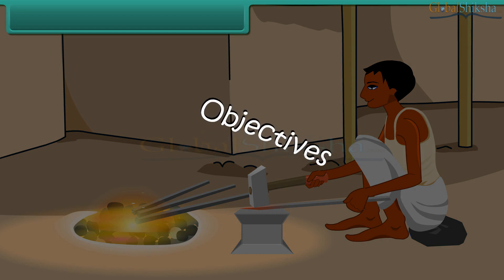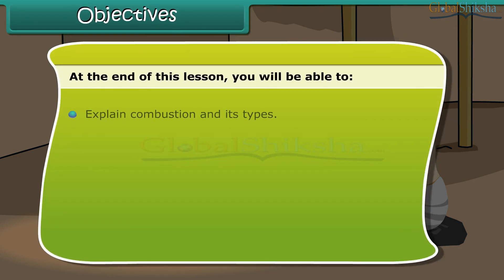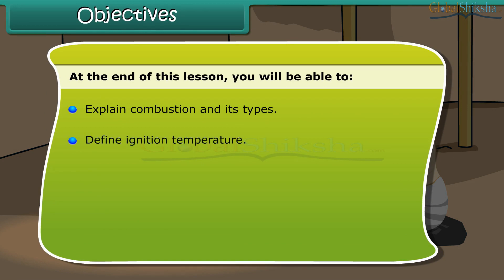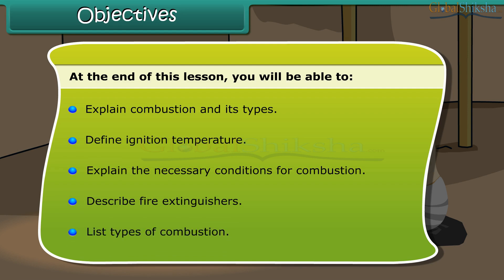At the end of this lesson you will be able to explain combustion and its types, define ignition temperature, explain the necessary conditions for combustion, describe fire extinguishers, and list types of combustion.